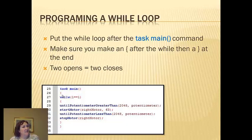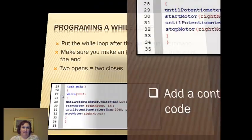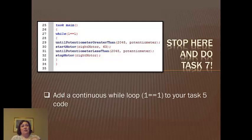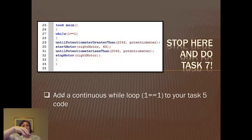What you open, you must close — if you don't, it doesn't work. Give it a try. In this case, a while loop with the potentiometer: while loop is open until potentiometer greater than 2048, starts the motor; until potentiometer is less than 2048, stops the motor; close the while, close the task. You should be able to have the motor turn on and off repeatedly. It gets very annoying.